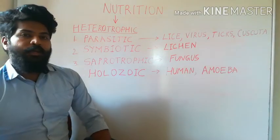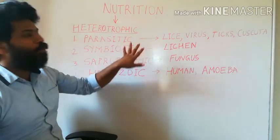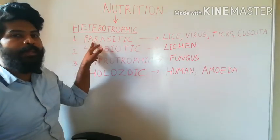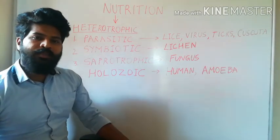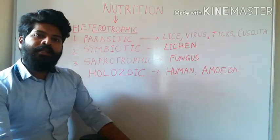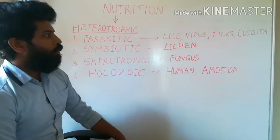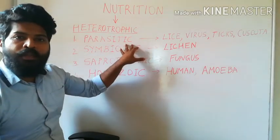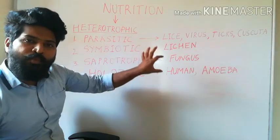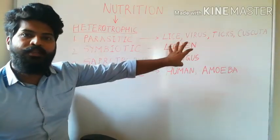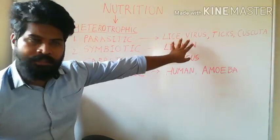Heterotrophic nutrition can be further studied under four heads. The first is parasitic nutrition. 'Para' means other and 'site' means place. These are organisms which are living inside other organisms or upon them to obtain their food. Such an organism is known as a parasite. Examples include lice, virus, and ticks.